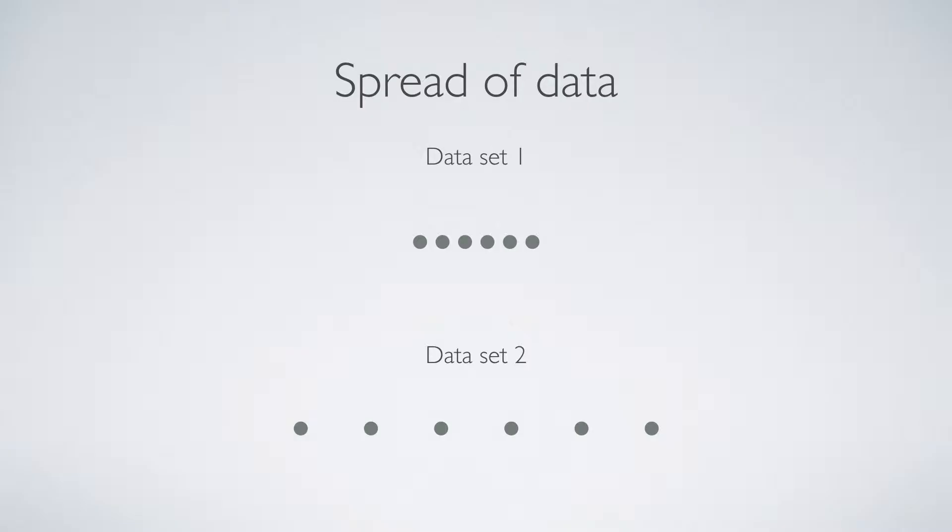If I look at these two data sets, I can see that data set 1 has quite a narrow distribution and data set 2 has a much more broad distribution. But if I were to calculate the mean of each, they would both be the same.